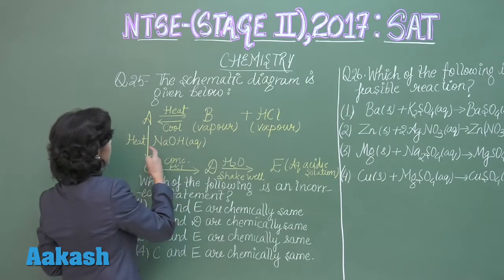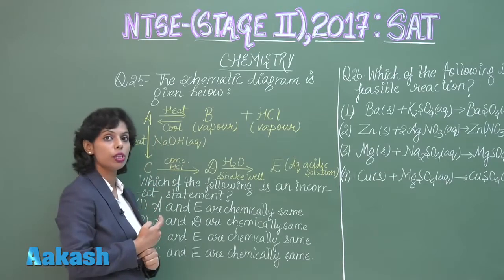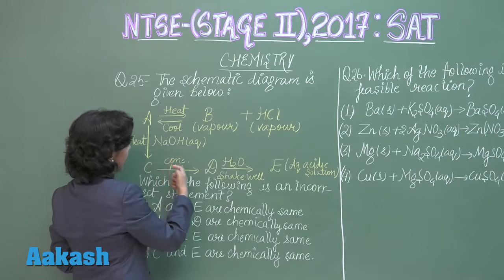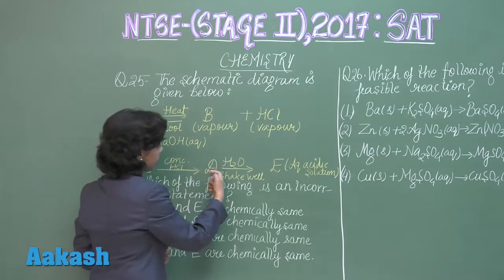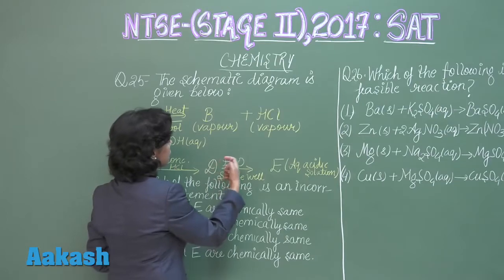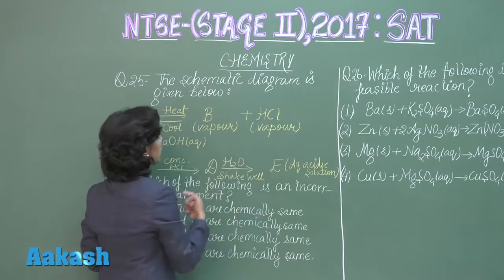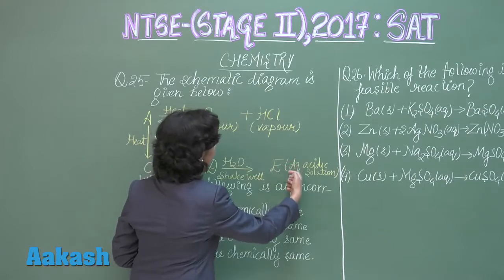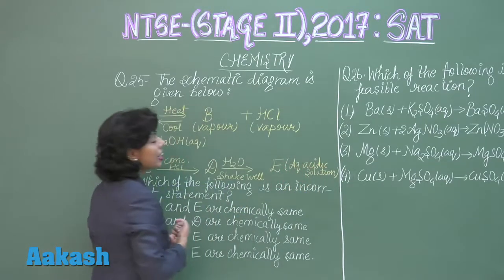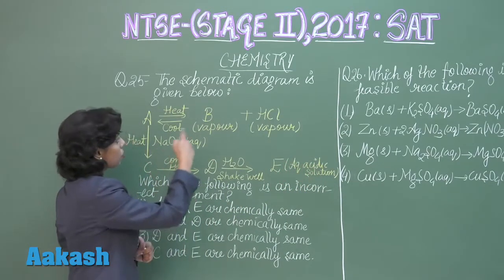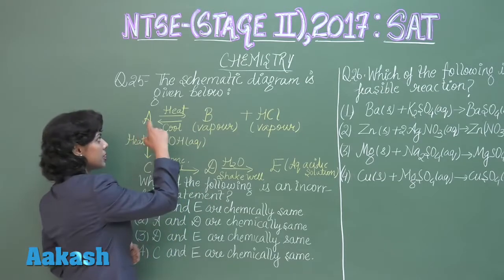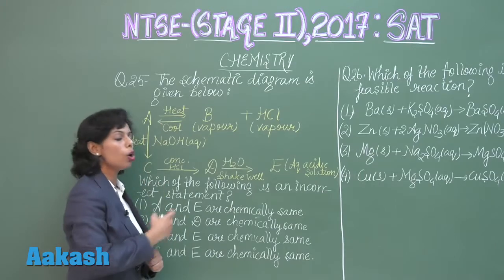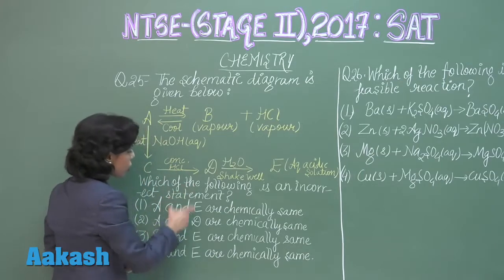Further, A is heated with NaOH in aqueous solution to give C. Then C reacts with concentrated HCl to give D. This substance D is shaken well with H₂O to give another substance E, which is an aqueous acidic solution. So we need to identify the substances and check which option is correct.